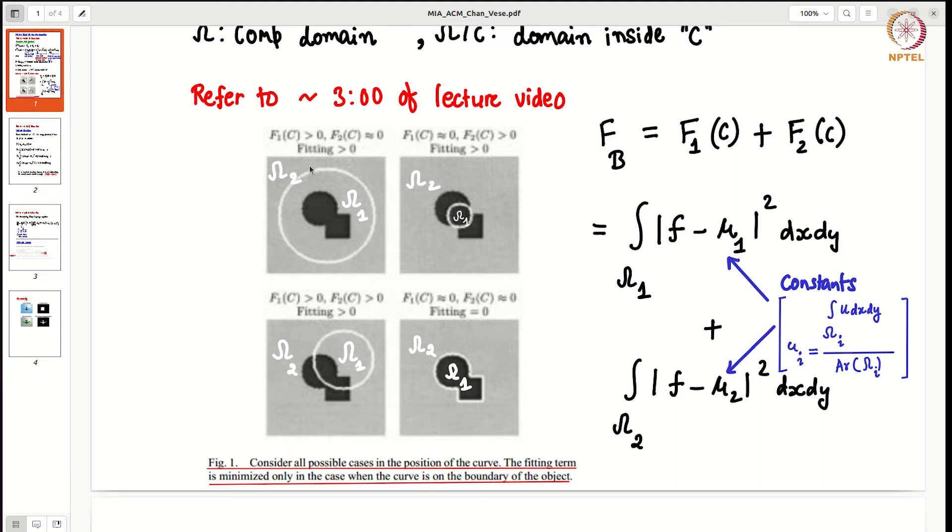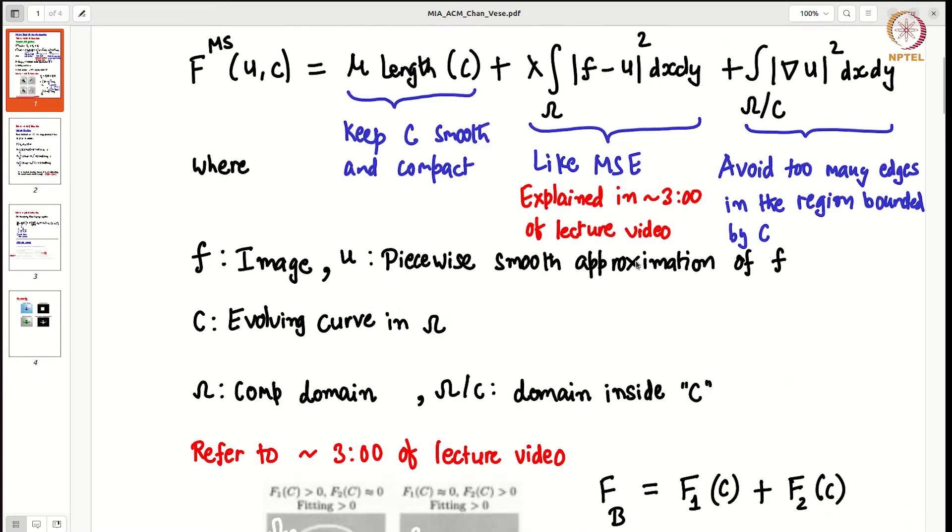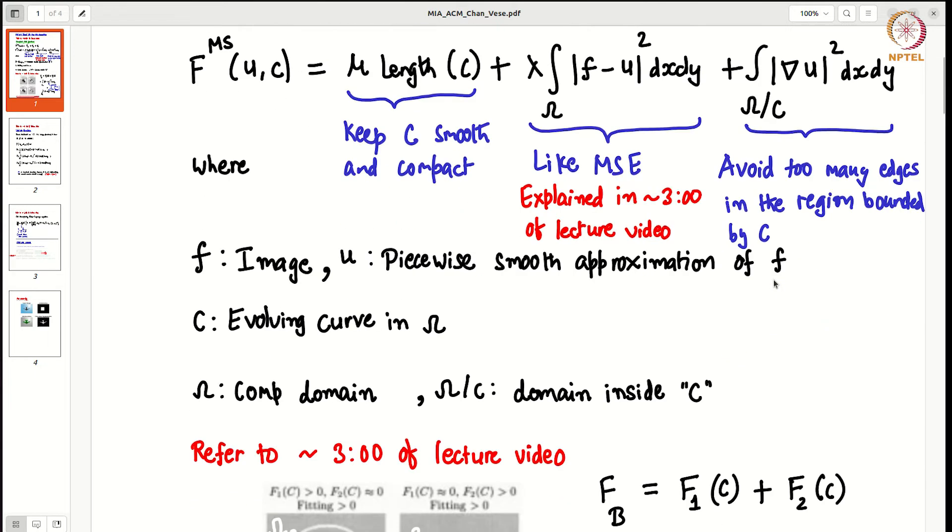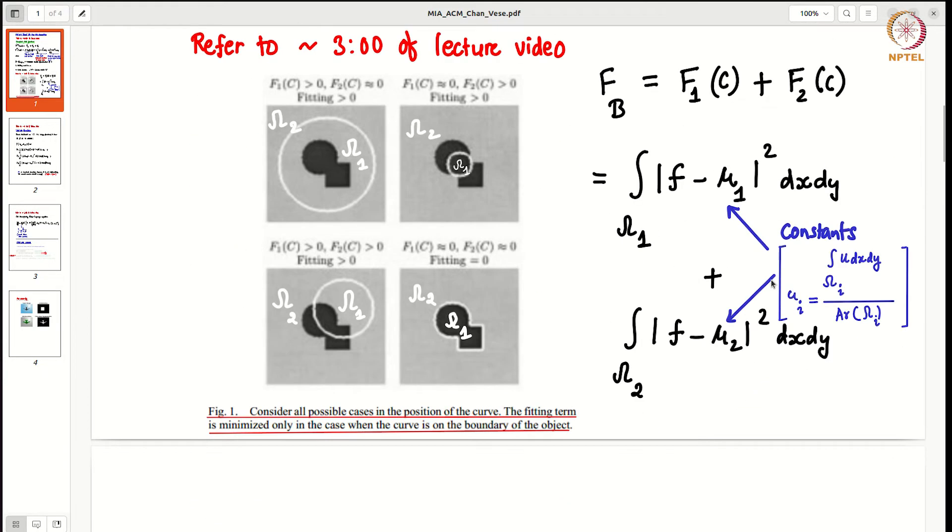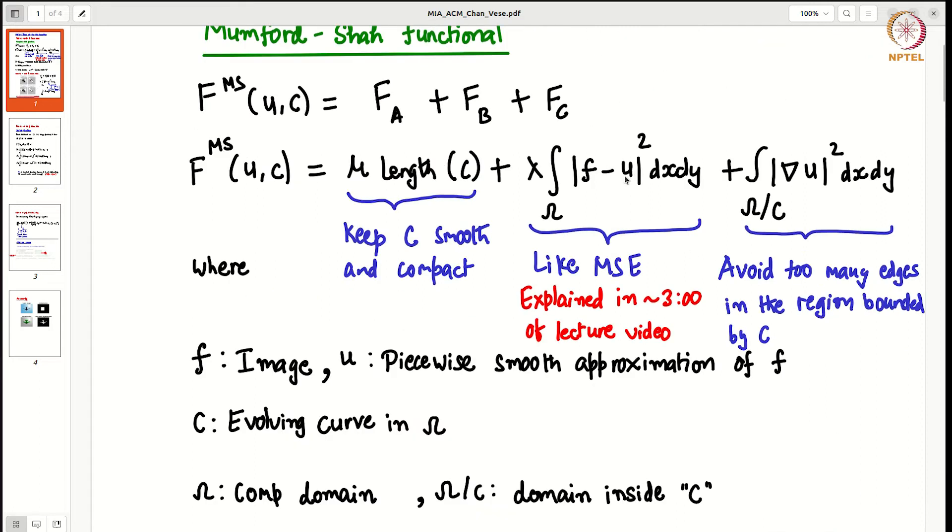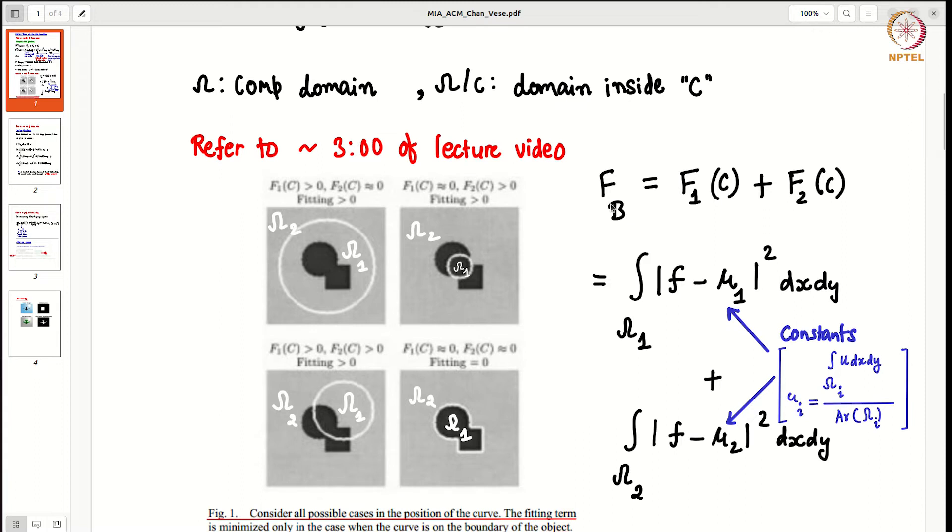We define our FB as F1C plus F2C. F1C calculates the mean square error within omega 1 and F2C calculates mean square error within omega 2. Here u in this function is the area integral, basically average of the image intensity in the region. So this is mu 1, mu 2.